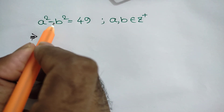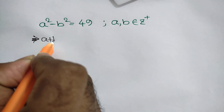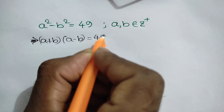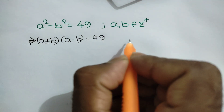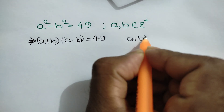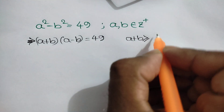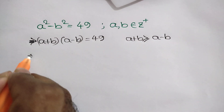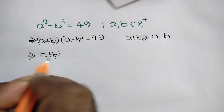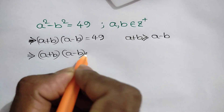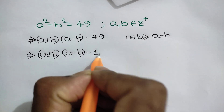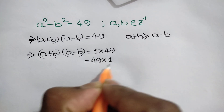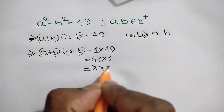This is a difference of squares, so we can write a plus b times a minus b is equal to 49. Now 49 can be written as 1 times 49, 49 times 1, or 7 times 7. Also, a plus b is always greater than or equal to a minus b.